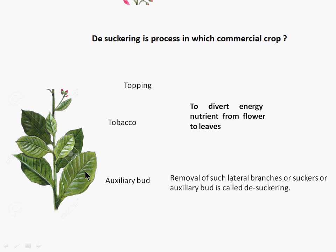Why do we do this? We do it because we want to divert energy and nutrients from the flower head towards the leaves, so that the leaf will become big and have good luster, giving good market value. So farmers will get more price. That's why we do topping and then the de-suckering process.